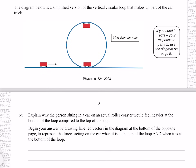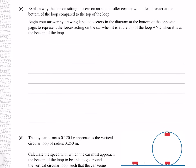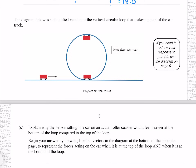The diagram below is a simplified version of the vertical circular loop that makes up part of the car track. Explain why the person sitting in a car on an actual roller coaster would feel heavier at the bottom of the loop compared to at the top. Imagining the forces at the top and bottom: gravity is the same in both cases. At the top, the centripetal force is mostly provided by gravity and some reaction force. At the bottom, the gravity force is opposite to the centripetal force, so the reaction force must cancel gravity and also provide the centripetal force by itself.